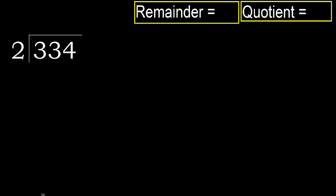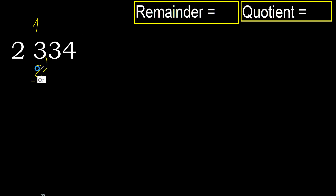334 divided by 2. 3 is not less, therefore with 3: 2 multiplied by which number is nearest to 3 but not greater? 2 multiplied by 2 is 4 — 4 is greater. 2 multiplied by 1 is 2, which is not greater. So 3 minus 2 is 1.